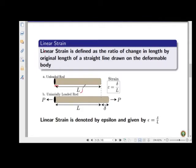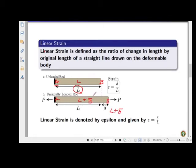When we apply an axial load P, there is a deformation — the rod which was of length L becomes L plus delta. The change in length is delta. If we consider point A and point B at the two ends, the distance between them was originally L and has now become L plus delta — where delta is the elongation or stretching. By definition, strain epsilon equals change in length delta divided by original length L.